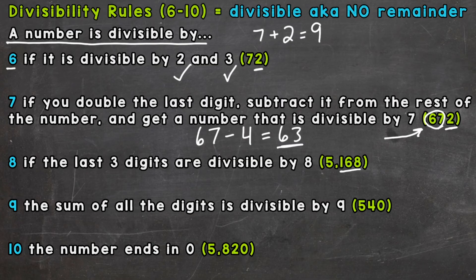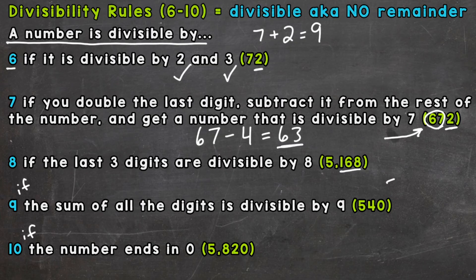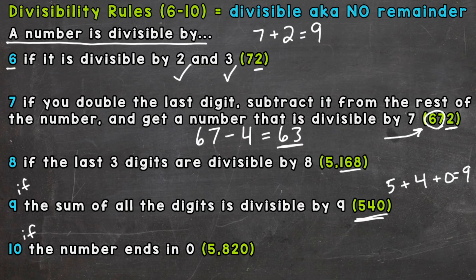On to 9. A number is divisible by 9 if the sum of all the digits is divisible by 9. So if all the digits added together are divisible by 9, then that whole number is divisible by 9. Let's add up all the digits: 5 plus 4 plus 0 — 5 plus 4 is 9, plus 0 is 9. And 9 is divisible by 9: 9 divided by 9 is 1. So we added up all the digits and they sum to 9, which is divisible by 9, meaning 540 is divisible by 9.